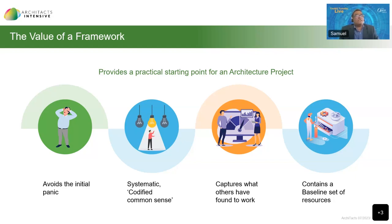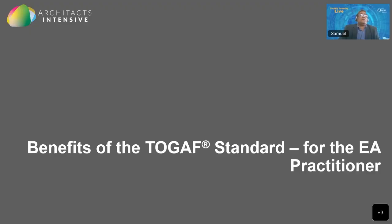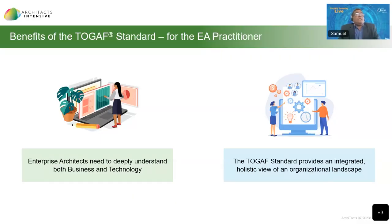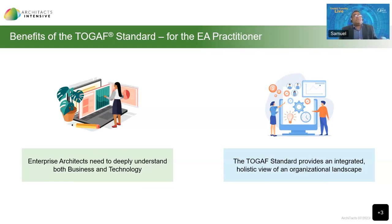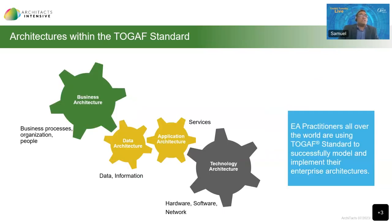Let's take a look at the benefits of the TOGAF standard for different user groups, starting with the EA practitioner. Enterprise architects need to deeply understand the business and the technology and how they can be modeled to support the business strategy. To that effect, the TOGAF standard provides an integrated, holistic view of an organization's landscape, which enables good strategic decision-making. The framework divides the enterprise architecture into four primary domains: business, data, application, and technology — you can see them here.